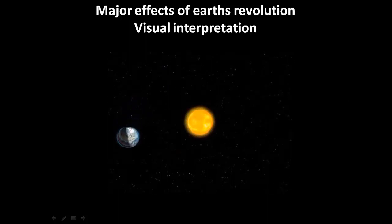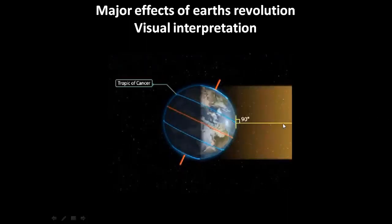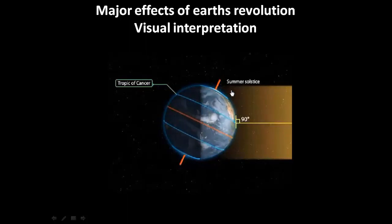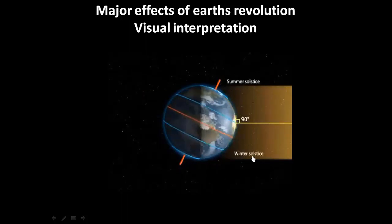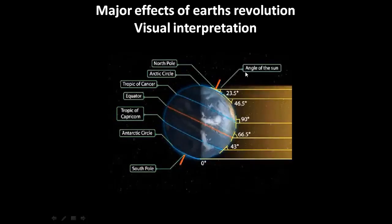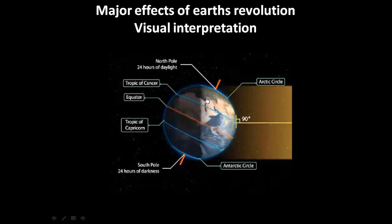Now we will see the position of the earth about the sun: summer solstice, 21st or 22nd June. The direct rays of the sun will fall on the Tropic of Cancer at a 90 degree angle. You can see the part of illumination — the northern hemisphere will experience summer solstice and the southern hemisphere will experience winter solstice. At this position, the earth will be tilted at 23 degrees and a half facing toward the sun. All the important latitudes are marked. Places above the Arctic Circle experience 24 hours of daylight; places below the Antarctic Circle experience 24 hours of darkness.